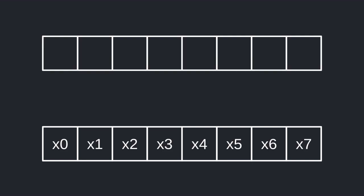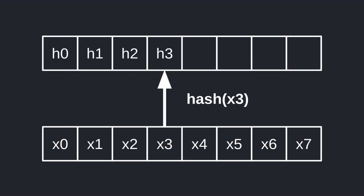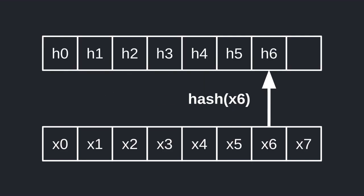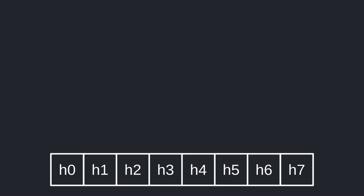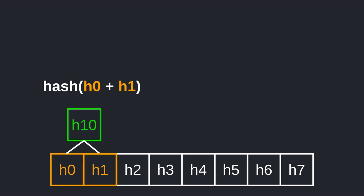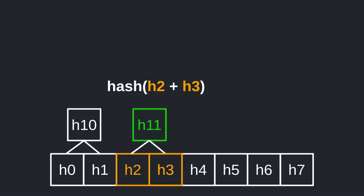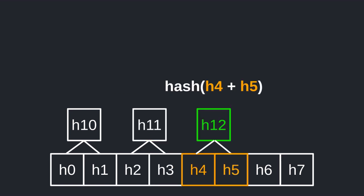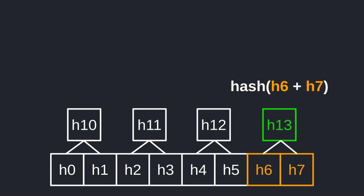For each element in the array we're going to compute the cryptographic hash of the element and then store it in a new array. From this array of hashes we take the first two elements and compute their hash, then take the next two elements and compute their hash, and we continue this process until we've computed the hash of the last two elements.